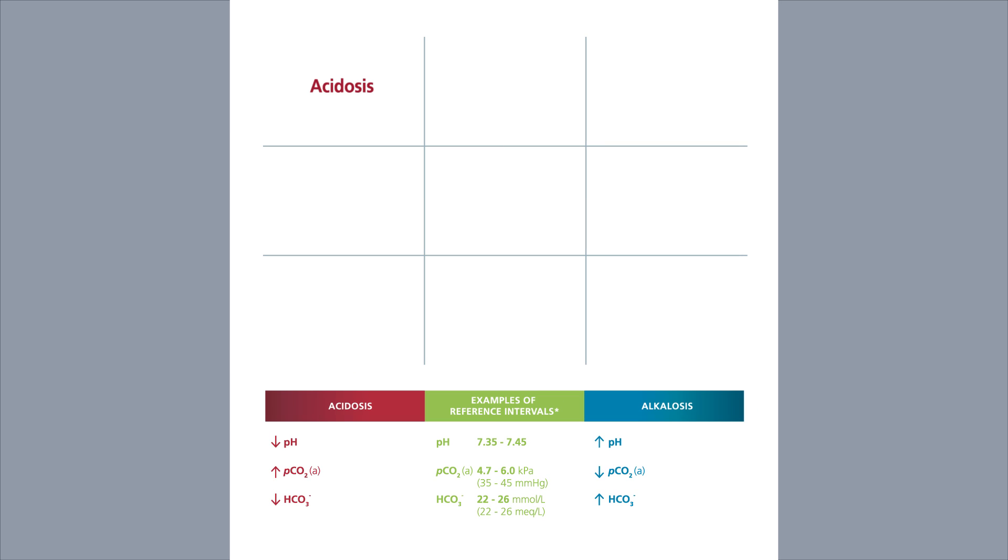When setting up the tic-tac-toe, we place acidosis, normal, and alkalosis in the first row. Depending on whether a value represents acidosis, normal, or alkalosis, we note our parameter in the corresponding column.